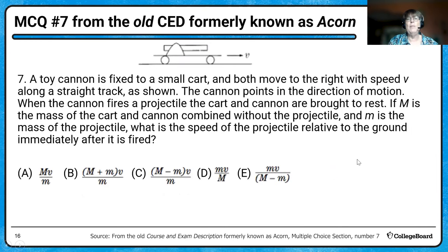To find energy lost: we had a certain kinetic energy initially, and less after the collision with the force sensor. Substituting our numbers, the energy lost is about 0.012 joules (12 millijoules). Note: if you use an incorrect mass from a previous part but substitute it correctly in this part, you can still receive full credit on the scoring rubric. Take a deep breath and move through these problems.